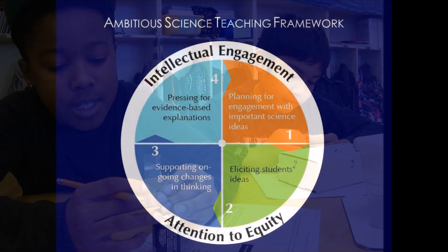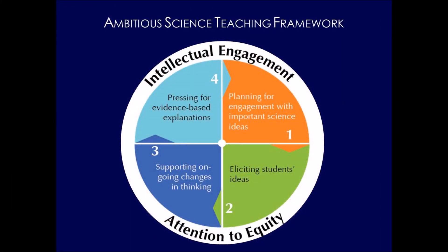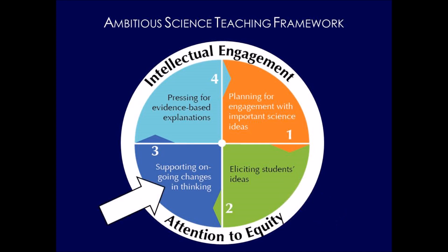This eliciting of students' initial ideas is part of the ambitious teaching framework. The framework includes four core science teaching practices. After the teacher plans for student engagement, the teacher elicits students' ideas. In the prior clip, you saw how students had materials to build circuits and a drawing scaffold to create models of their thinking. After eliciting ideas, the teacher engages students in a series of activities and investigations to support ongoing changes in their thinking.